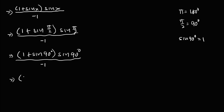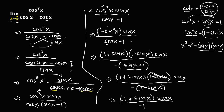Since sine 90 degrees equals 1, we have 1 plus 1 times 1, over negative 1. That gives us 2 times 1 over negative 1, which equals positive 2 over negative 1. Therefore, the final answer is negative 2. The limit of cosine to the power 3x over cosine x minus cotangent x, as x approaches pi over 2, is equal to negative 2.